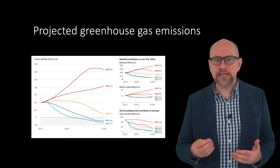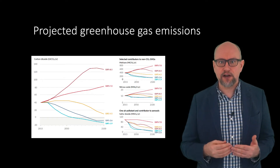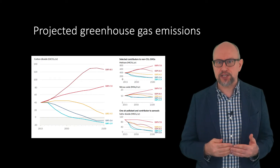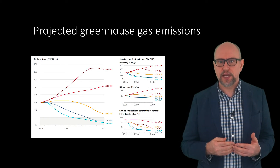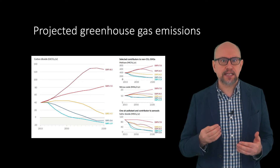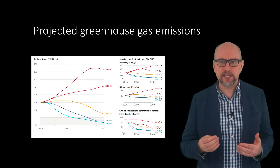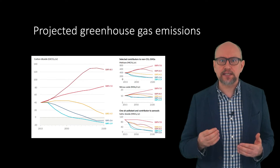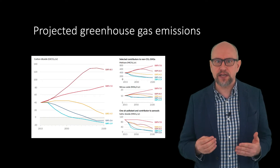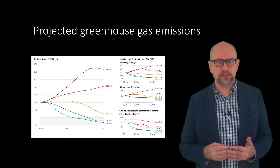The scenario with intermediate greenhouse gas emissions, SSP2 4.5, has emissions that stay around current levels until the middle of the century. The scenarios with very low and low greenhouse gas emissions, SSP1 1.9 and SSP1 2.6, have emissions that decline to net zero around or after 2050, followed by varying levels of net negative CO2 emissions.